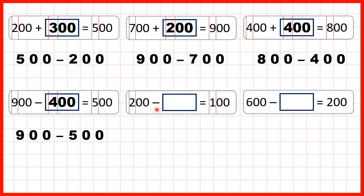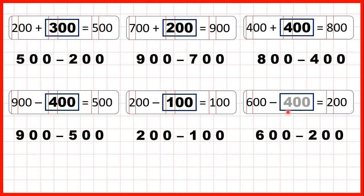Now 200 minus something is 100. If we work out 200 minus 100 is 100, so that's our missing number. And finally, we have 600 minus something is 200, so our missing number is 400.